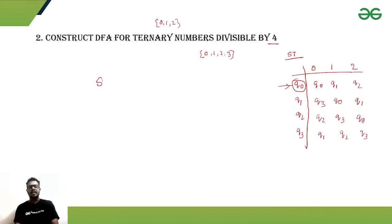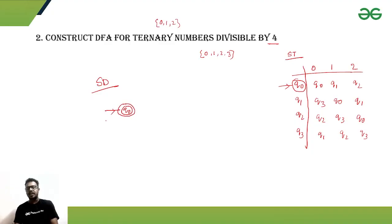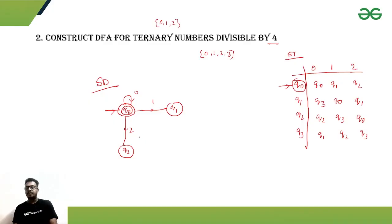For the state diagram: q0 is the initial and final state. From q0, getting zero stays in q0, getting one goes to q1, and getting two goes to q2. From q1, getting zero goes to q3, getting one goes to q0, and getting two stays in q1.